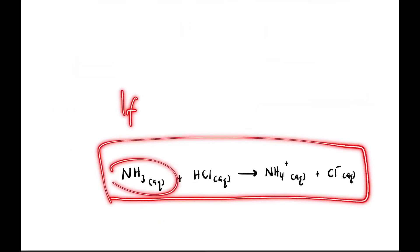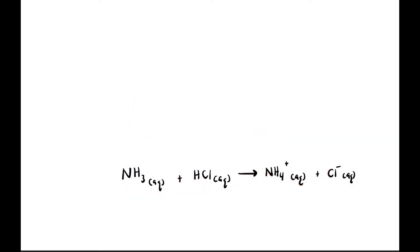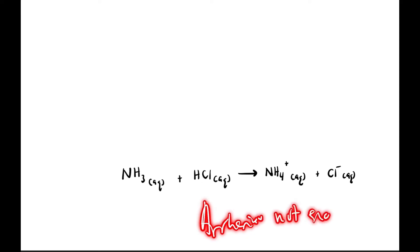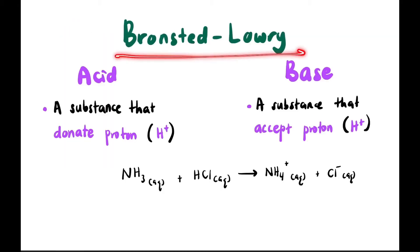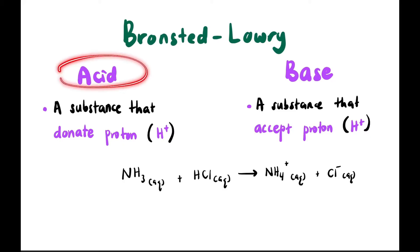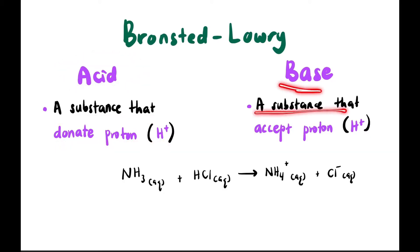If we are given the equation NH₃ + HCl → NH₄⁺ + Cl⁻, the Arrhenius theory alone is not sufficient to explain it. So we use another definition from Bronsted-Lowry. Bronsted-Lowry says an acid is a substance that donates a proton (H⁺), while a base is a substance that accepts a proton (H⁺).